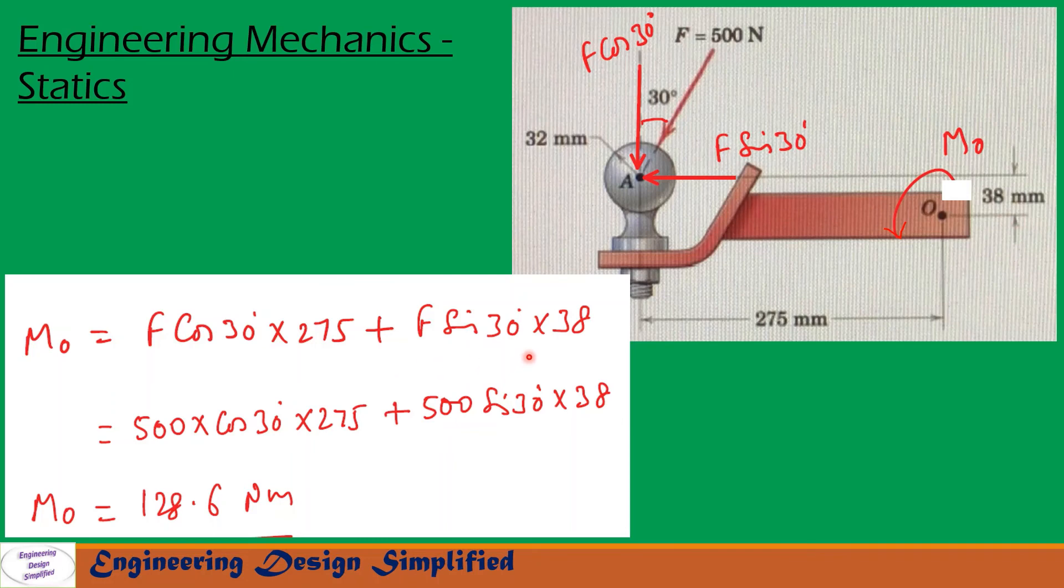After substituting the values and simplification, we get M_O, the moment about point O due to this force F = 500 N, is 128.6 N⋅m.